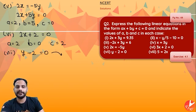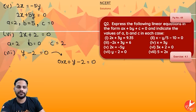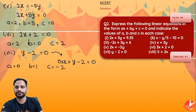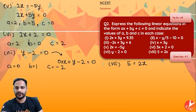The seventh equation is y − 2 = 0. Written in linear equation in two variable form: 0·x + y − 2 = 0. So a = 0, b = 1, c = −2.